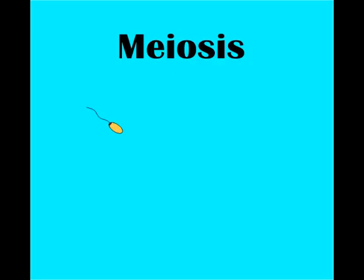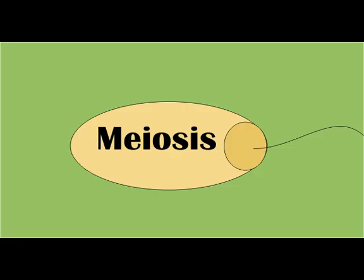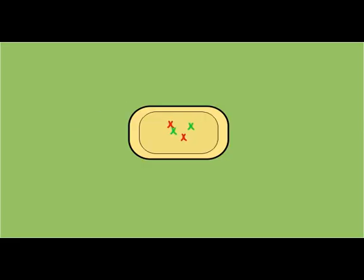The other cell division process is meiosis. Meiosis is the reproduction of cells. Meiosis is a type of cell division in which the parent cell splits into four daughter cells, each with half the number of chromosomes as the parent cell. It is generally used in the production of cells in sexually reproducing organisms.